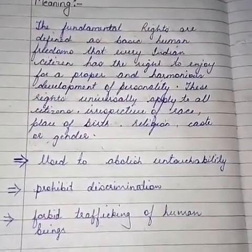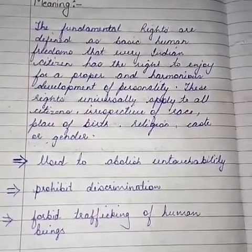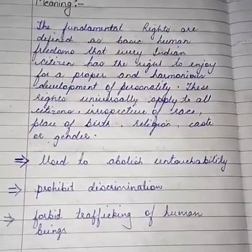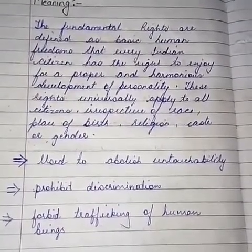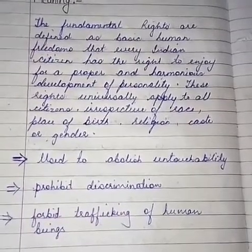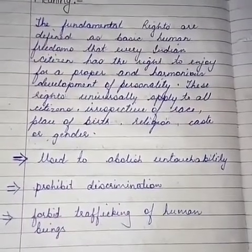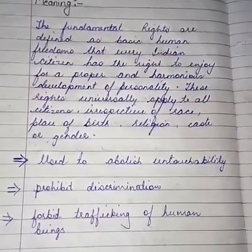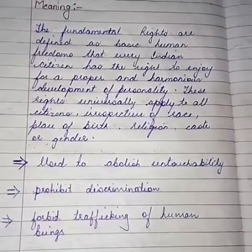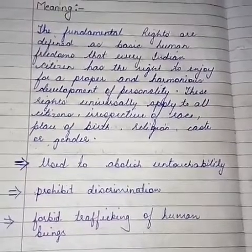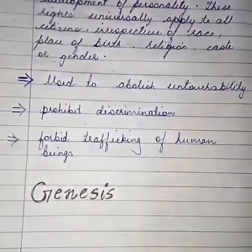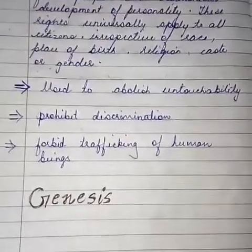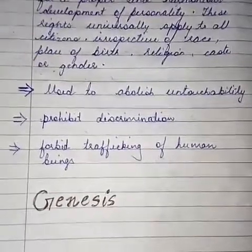As mentioned in an earlier video, the right against exploitation also forbids human trafficking — that had to be stopped. So this was all about the meaning of fundamental rights. Now let's move to the next point, which is Genesis — how did the evolution of fundamental rights take place?